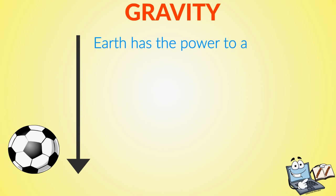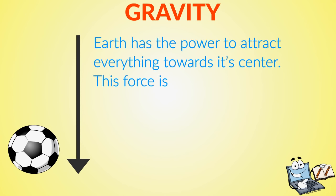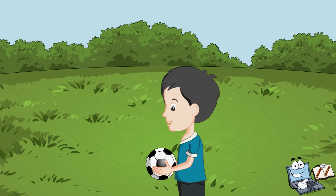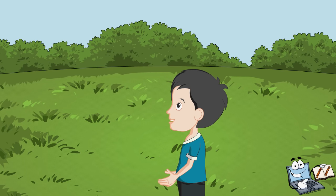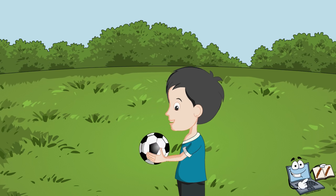Earth has the power to attract everything towards its center. The force is called gravity. Gravity acts on every object of Earth. That's why when you throw up anything, it comes down.